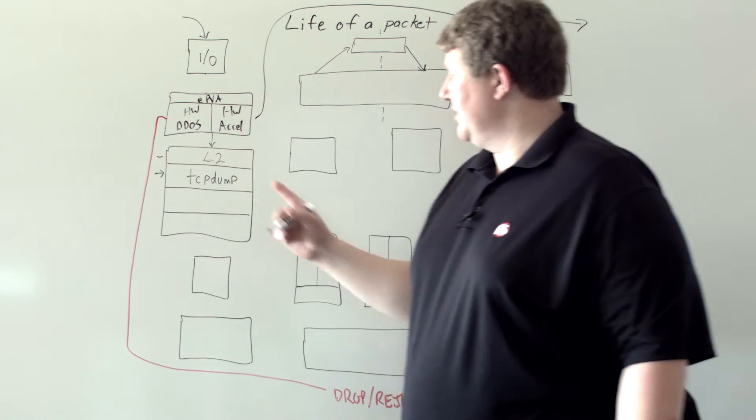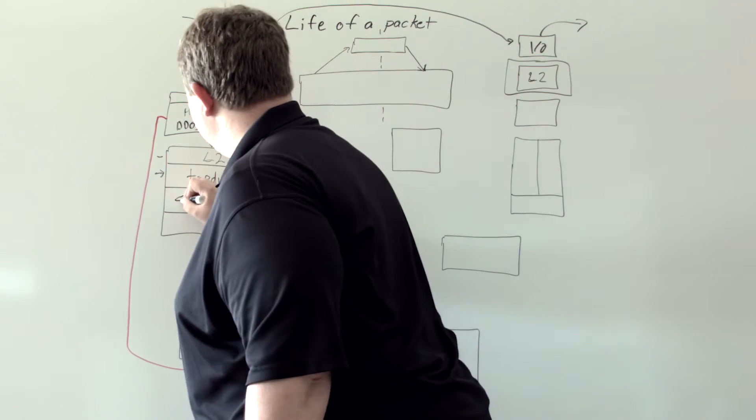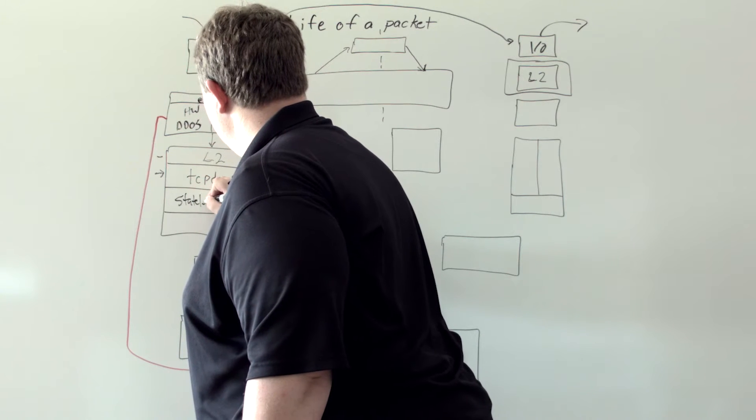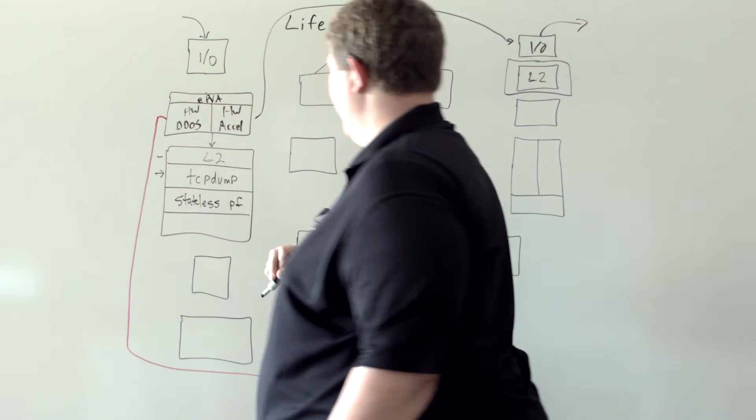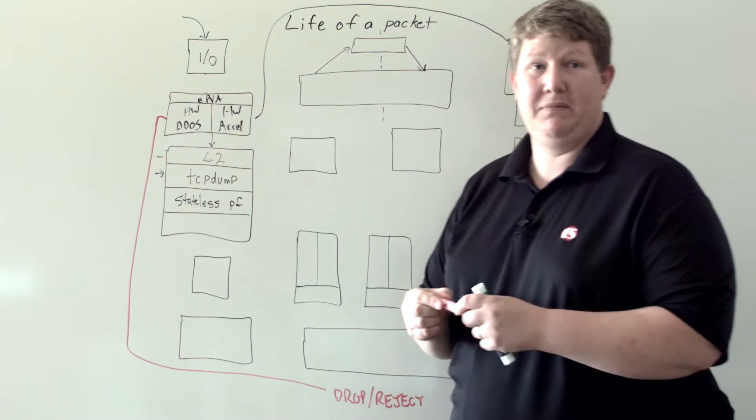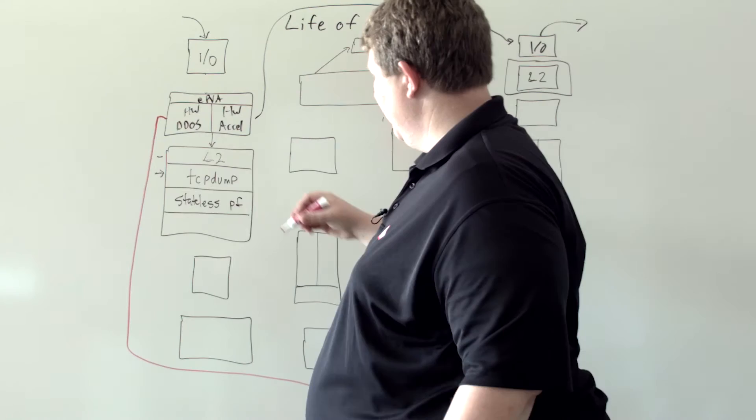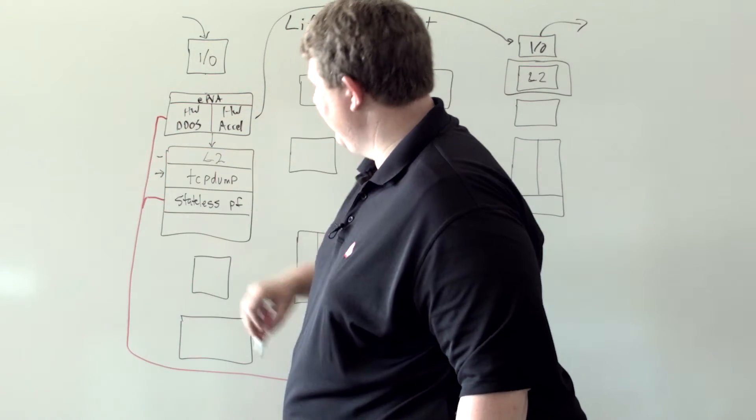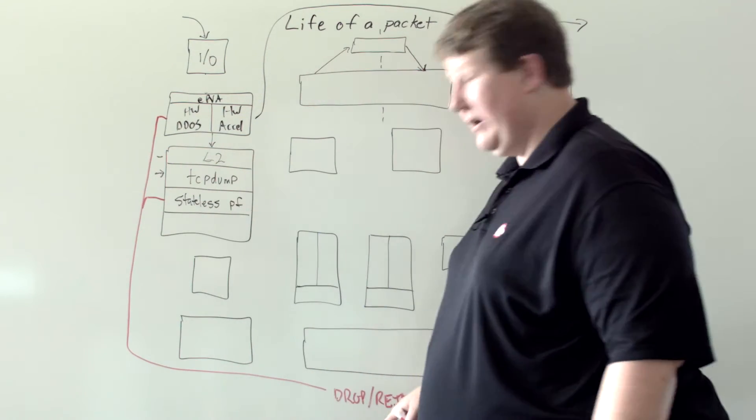And then also in layer 2, your stateless packet filters. Again, with the stateless packet filter, if you match something that's configured to be dropped, then you're going to join this little path down and come down here and drop and reject.